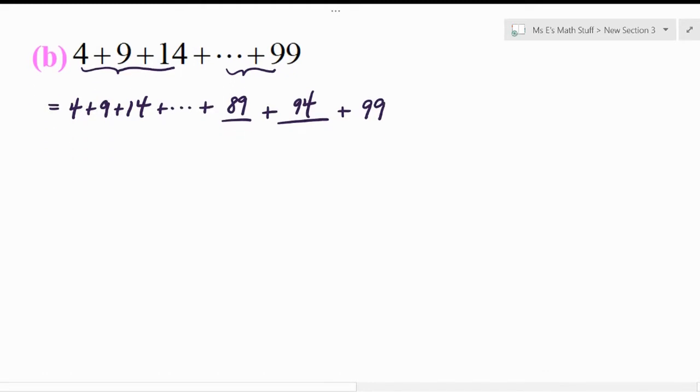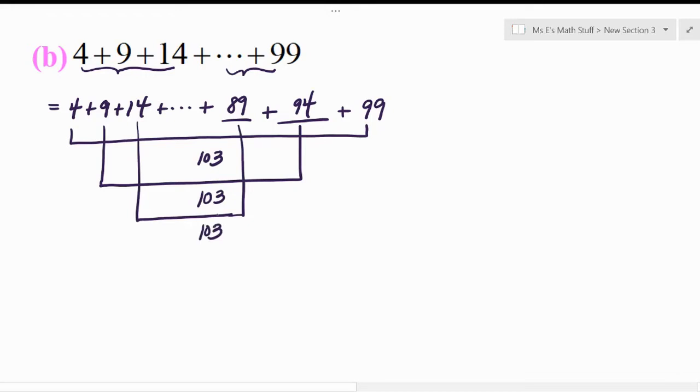So you could kind of work backwards like that, and then you could see if our trick would work. So four plus 99 is 103, and nine plus 94 is 103, and 14 plus 89, oh yeah, it's 103. Okay, but now it's a matter of figuring out how many 103s would we have?